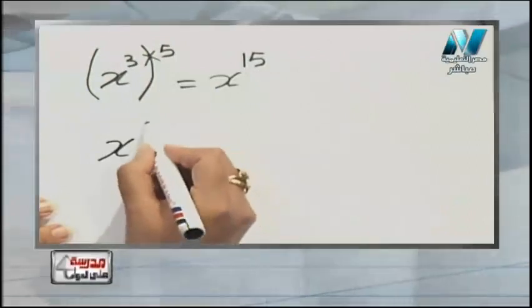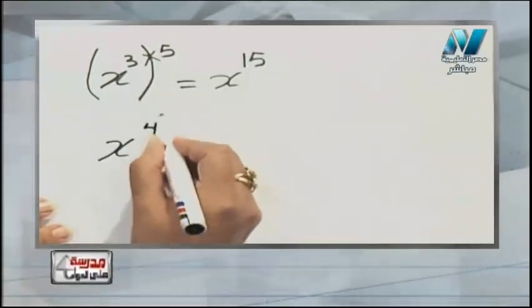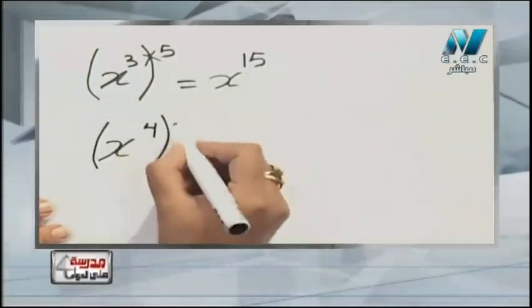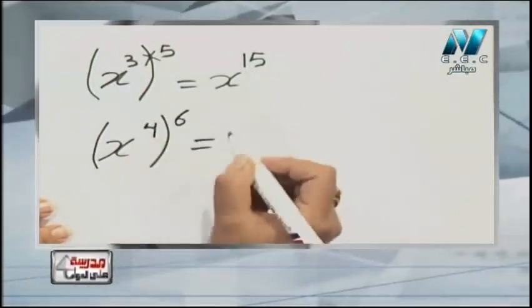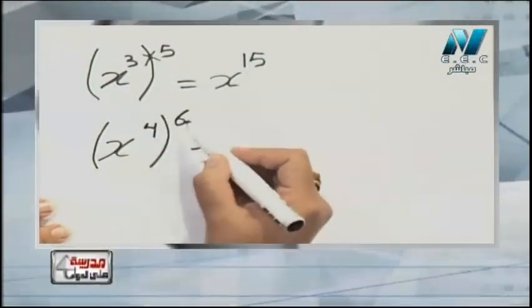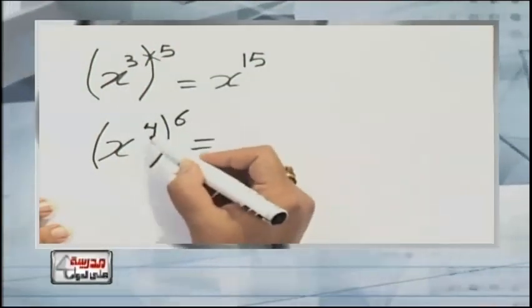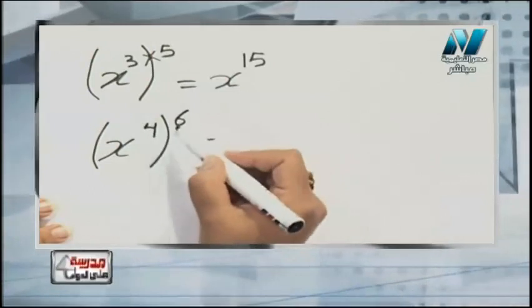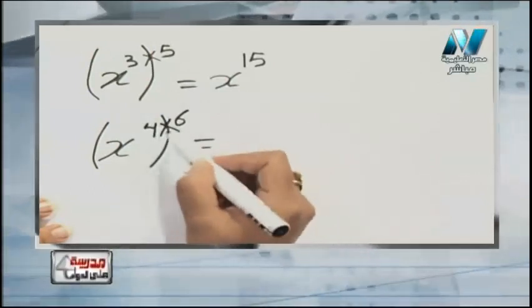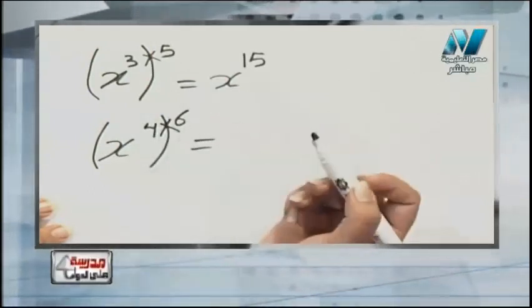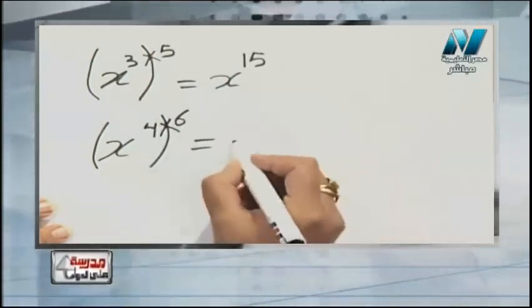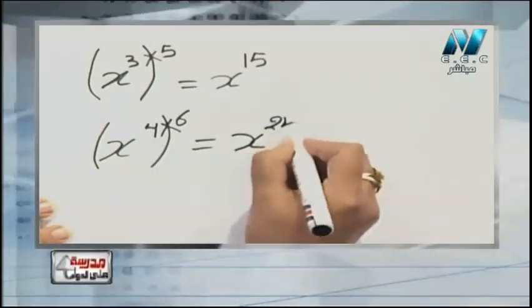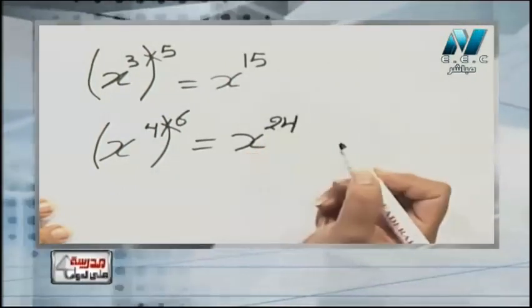Another example: x power 4, all to the power 6. Power of the power — we multiply them. 4 times 6 equals 24. So it will be x power 24.